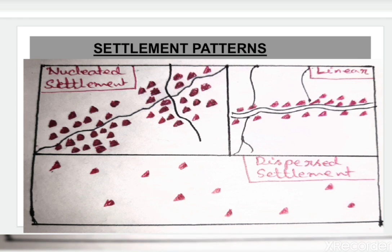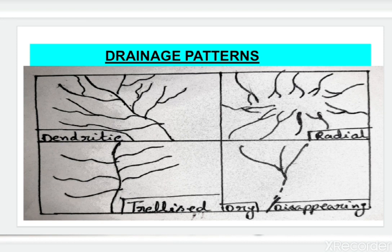Moving on, we will learn the drainage patterns. In the topo sheet there are four drainage patterns: Dendritic, Radial, Trellis, and Disappearing or Dry.